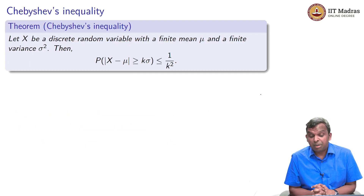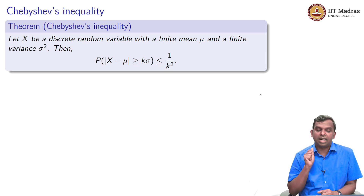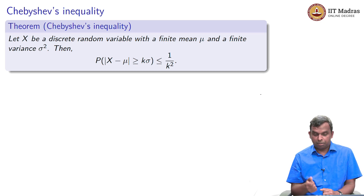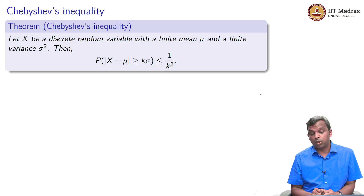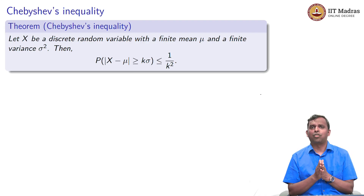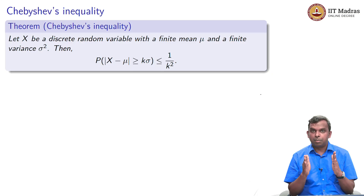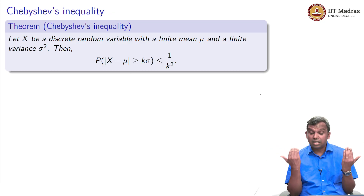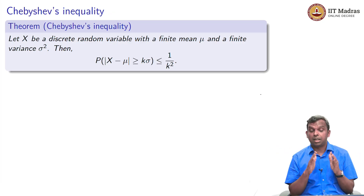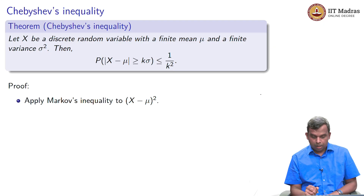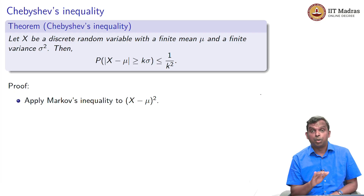The next inequality is called Chebyshev's inequality. For this, you need a finite mean and a finite variance — X is a discrete random variable with finite mean and finite variance. Then the probability that |X minus mu| is greater than or equal to K sigma is less than or equal to 1 by K squared. This is exactly what we are looking for: with larger K, the probability that X goes outside the band falls as 1 by K squared. The proof uses Markov's inequality applied to X minus mu whole squared — that is why Markov's inequality is so powerful.